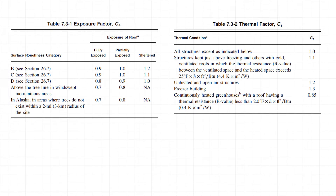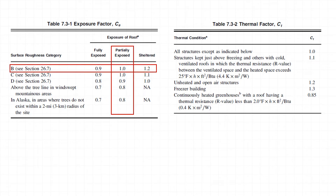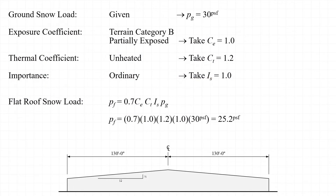For this structure with a partially exposed roof and terrain category B, we'll select an exposure factor C sub E equal to 1.0. Since the structure is unheated, we'll select a thermal factor C sub T equal to 1.2. Since the structure is simply a warehouse, we'll categorize it as ordinary importance. Given our ground snow load of 30 psf, C sub E of 1.0, C sub T of 1.2, and importance factor of 1.0, we calculate a flat roof snow load P sub F of 25.2 pounds per square foot.